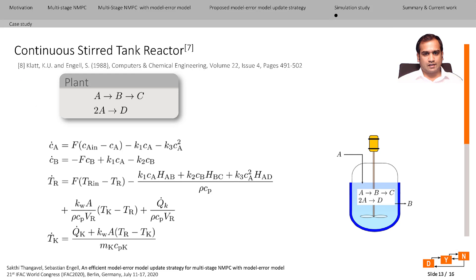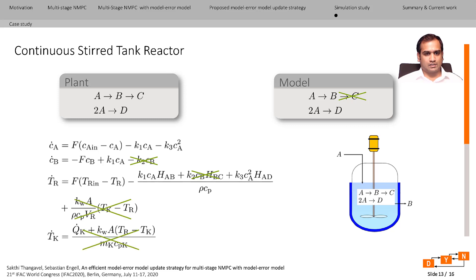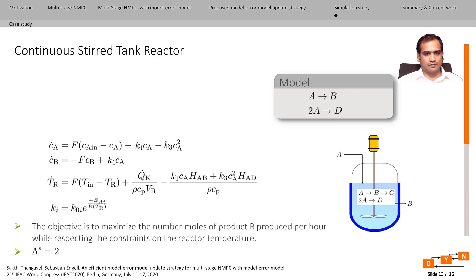We chose a continuous stirred tank reactor case study to demonstrate the advantage of the proposed model error model update scheme over the update scheme from the initial work. The actual reaction scheme under consideration is given here, and the true plant dynamics are obtained from molar and energy balances. We assume the nominal model does not model the exothermic reaction taking place between B to C, and that the dynamics of the cooling jacket are not modeled. The objective is to maximize the number of moles of product B produced per hour while respecting constraints on the reactor temperature.